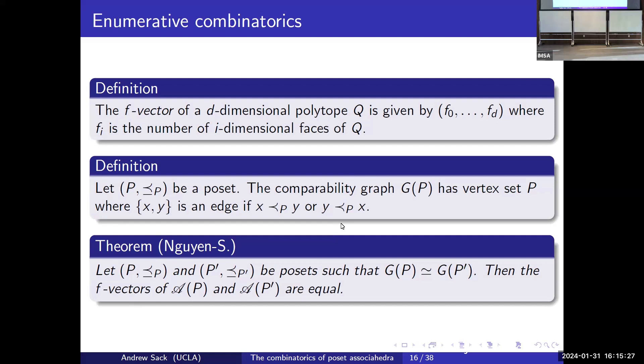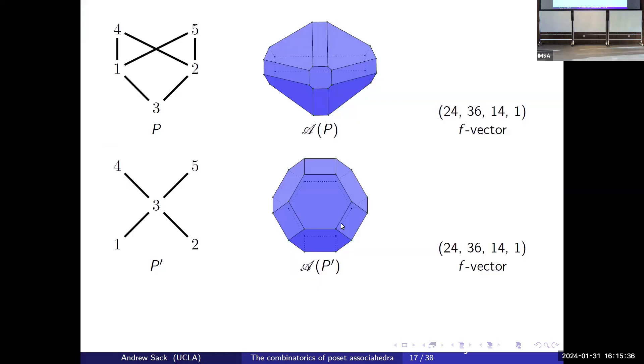You might be saying, okay, they have the same F vector, why don't you show that they are combinatorially equivalent? But unfortunately it isn't the case. We see that these two posets have the same comparability graph but they're not combinatorially equivalent. Is anybody seeing why they're not combinatorially equivalent?